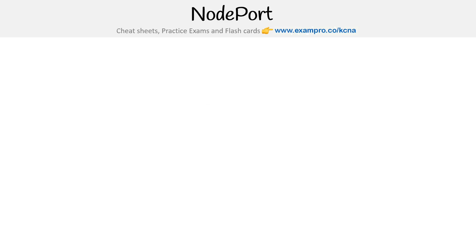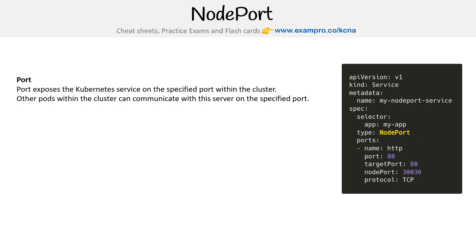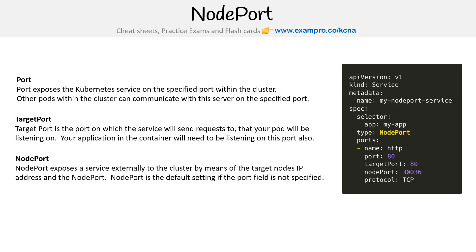Just to reiterate, because it is kind of confusing. Port exposes the Kubernetes service on the specified port within the cluster — other pods within the cluster communicate with the service on the specified port. Target port is the port on which the service will send requests, that the pod will be listening on — your application in the container will need to be listening on this port. NodePort exposes a service externally to the cluster by means of the target node's IP address and node port. NodePort is the default setting if the port field is not specified.